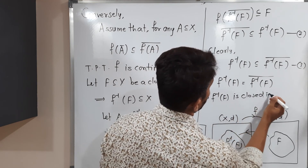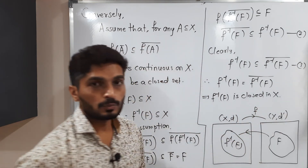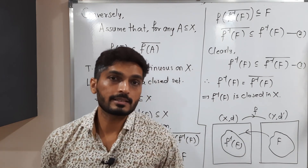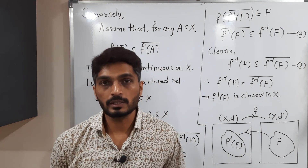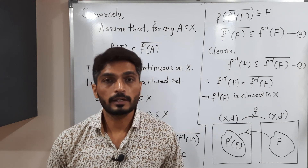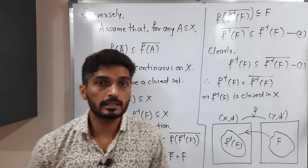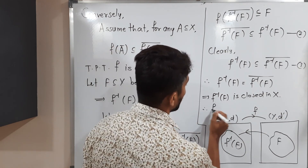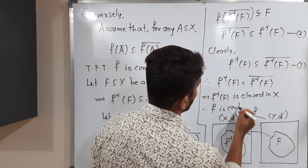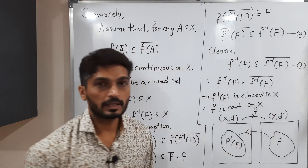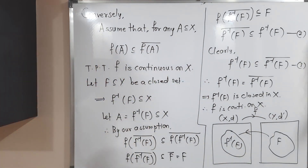Since the set and its closure are equal, by definition f⁻¹(F) is a closed set in X. We started with any closed set F in Y and proved that its inverse image is also closed in X. By the closed-set definition of continuity, we can conclude that f is continuous on X. The proof is complete.